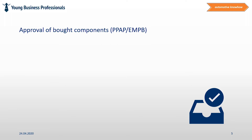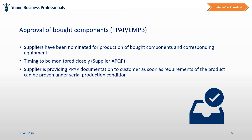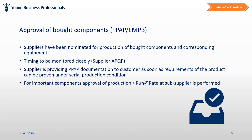Approval of board components. In parallel, a similar process will be performed for the board components. Suppliers will be monitored as well and the supplier APQP process is being tracked. The supplier provides documentation to the customer as soon as requirements for the components can be proven under zero production conditions. For important components, a production approval and a run at rate at the supplier may take place. It is common that preliminary or conditionally approved components will be used for pre-zero production in this phase.